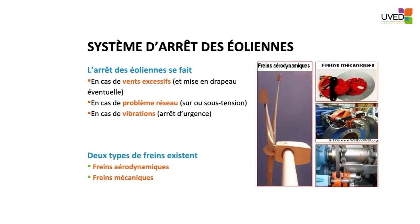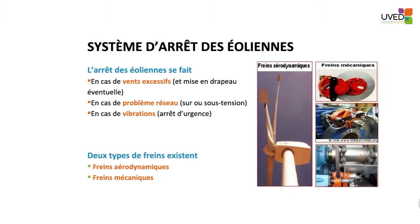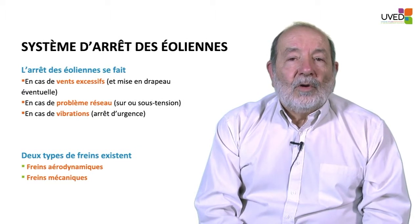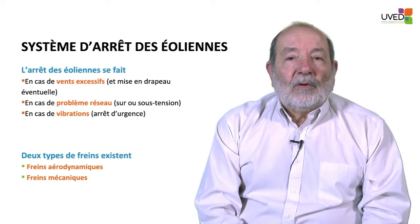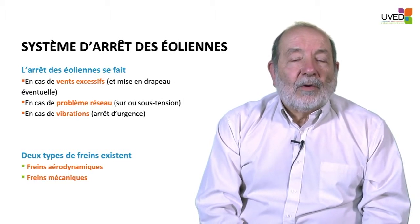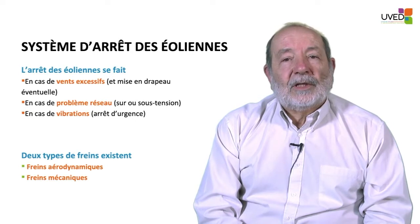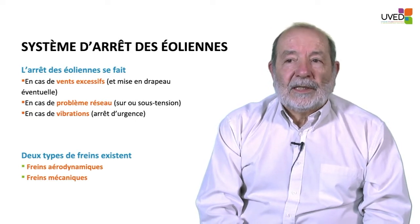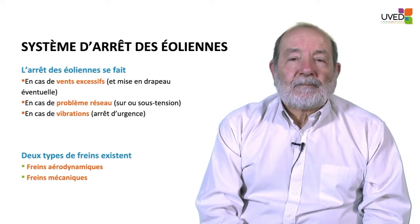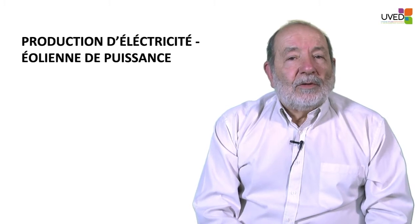For fixed blades, it is the tip of the blade that will turn in order to slow down the windmill. When the windmill stops, large disc brakes keep it in place and prevent it from restarting, especially when technicians are performing self-maintenance work.